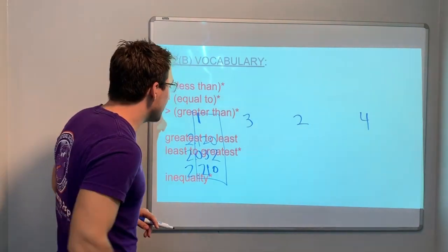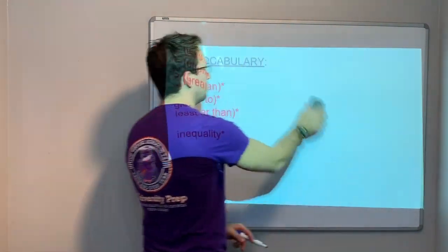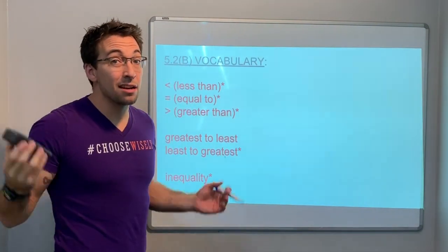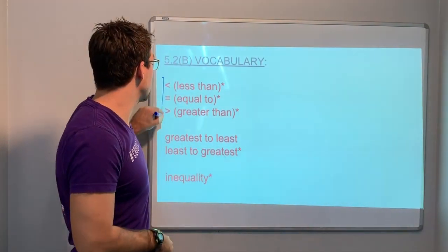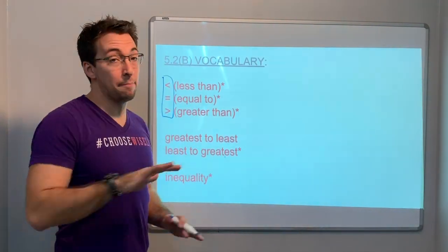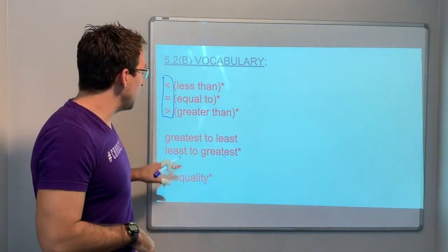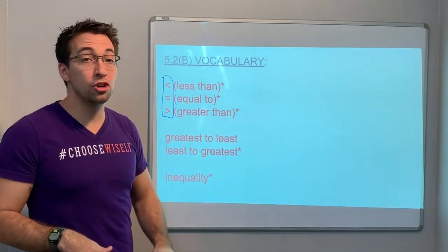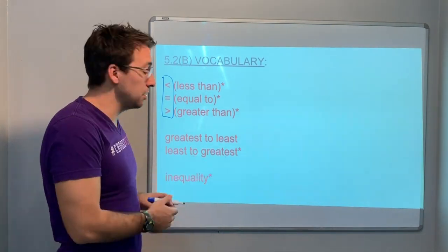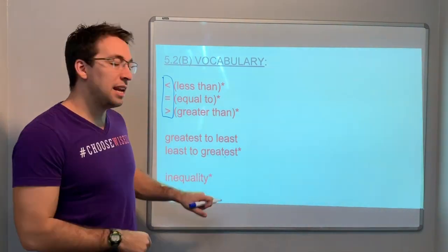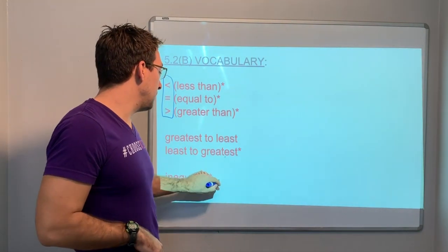What kind of vocabulary do you need for cheat code 5.2b? Less than, equal to, greater than — you have to know these symbols, they're imperative. And then greatest to least, least to greatest — smallest to biggest, biggest to smallest, that's what those mean. Inequality means unequal.